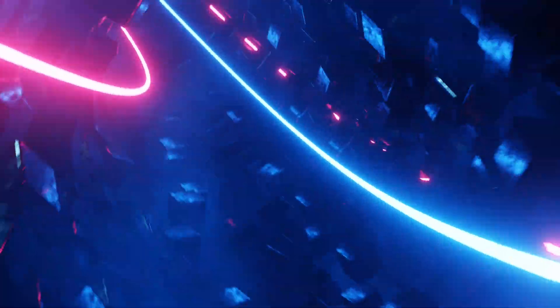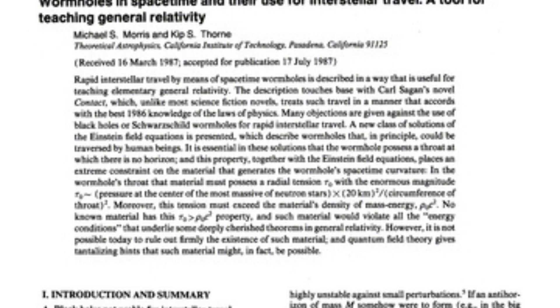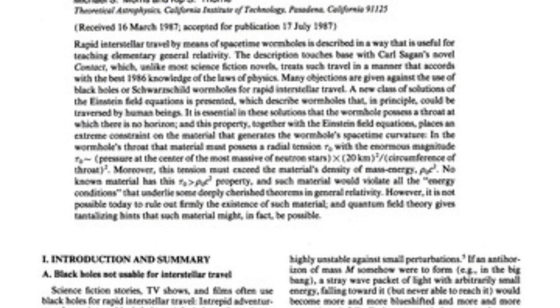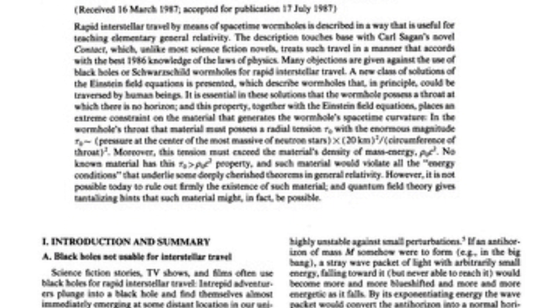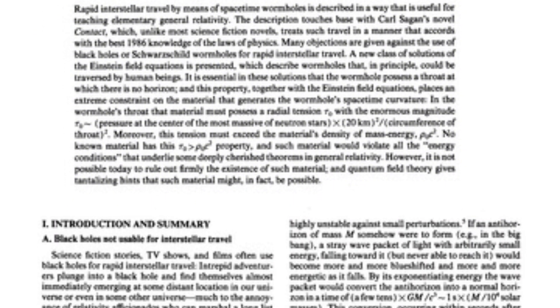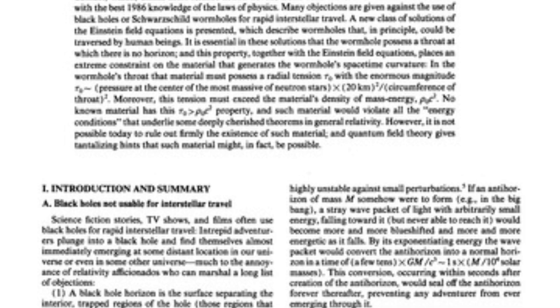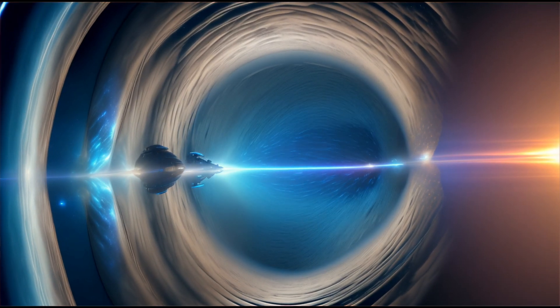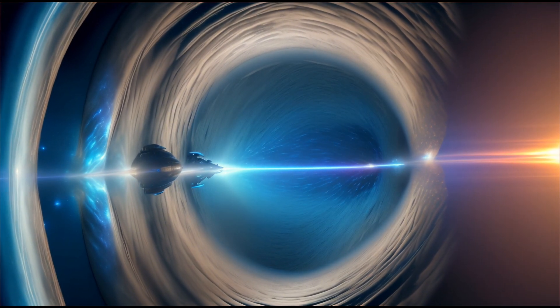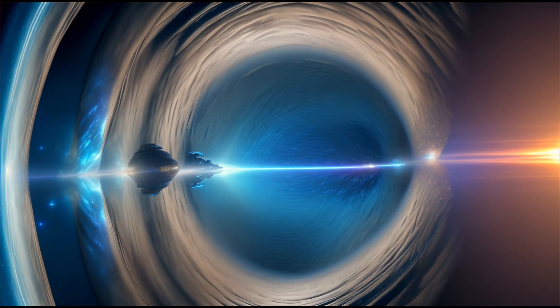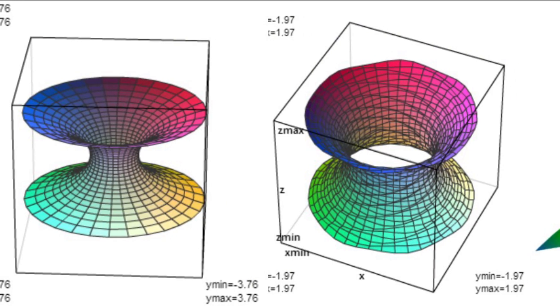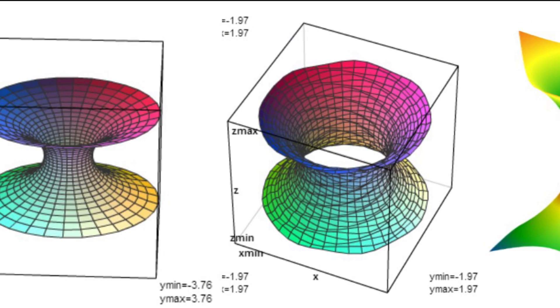In their 1988 paper 'Wormholes in Space-Time and Their Use for Interstellar Travel: A Tool for Teaching General Relativity,' Morris and Thorne explored the theoretical possibility of traversable wormholes. They proposed that such wormholes could be stabilized by the presence of exotic matter.